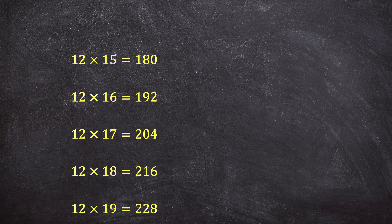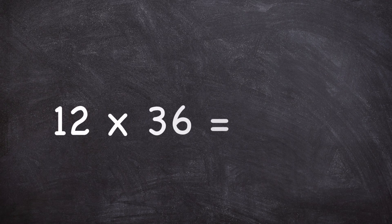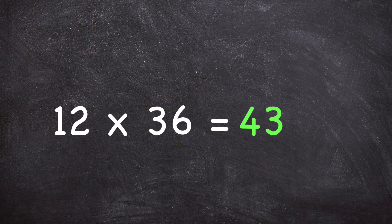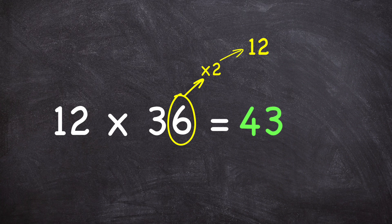Let's test out this pattern so you can see how easily it works. To find the product of 12 times 36, you take 36 and figure out how many whole times 5 goes into 36, ignoring the remainder. 36 divided by 5 is 7 and 1 fifth, so you add 7 to 36 to determine there are 43 tens in the product. Then to get the ones digit, take the ones digit of 36, which is 6, double it to get 12, then use the ones digit of that answer, 2, for the ones digit of the product, making the product 432.